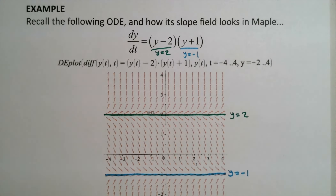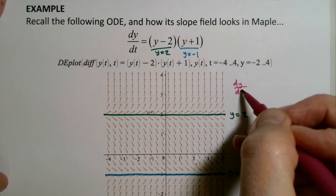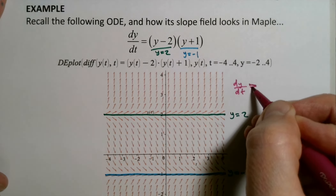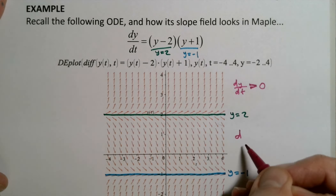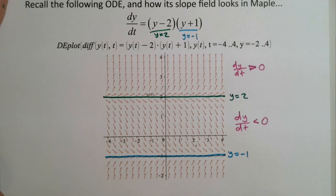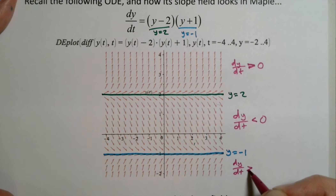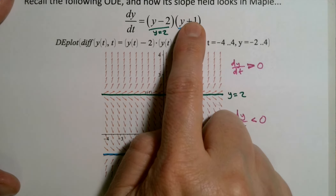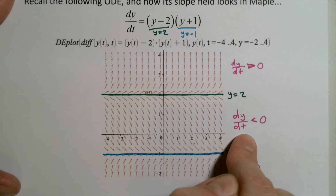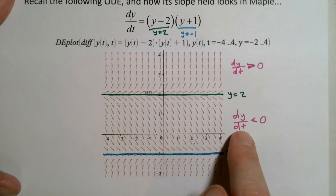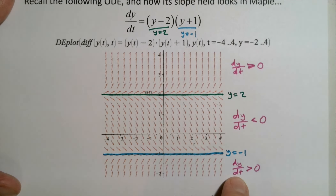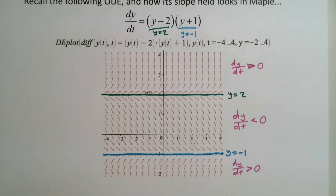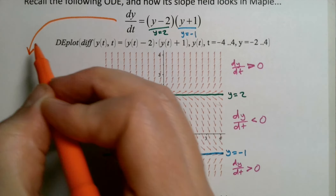The slope field shows us that if you're above y equals two, the derivative dy/dt — the slope everywhere up there — is greater than zero. If you're in between the two equilibrium solutions, the slope everywhere is less than zero. And if you're below the bottom equilibrium solution, the slope is positive. You can verify this by plugging in values: a value larger than two gives a positive times a positive, so the slope is positive. A value in the middle region gives a negative times a positive, which is negative. And any y value below negative one gives a negative times a negative, which is positive again.